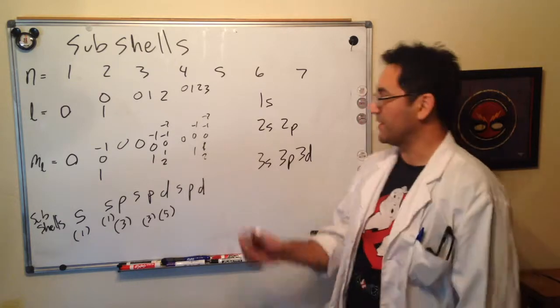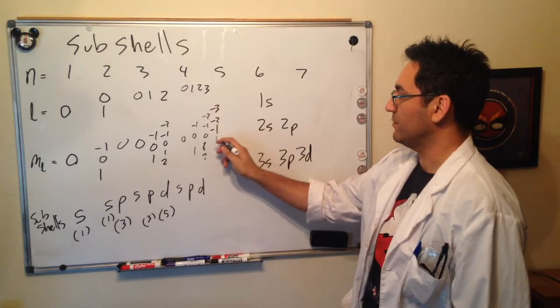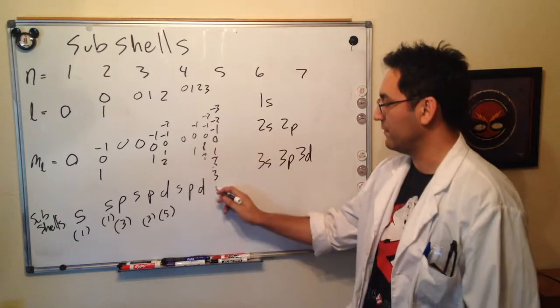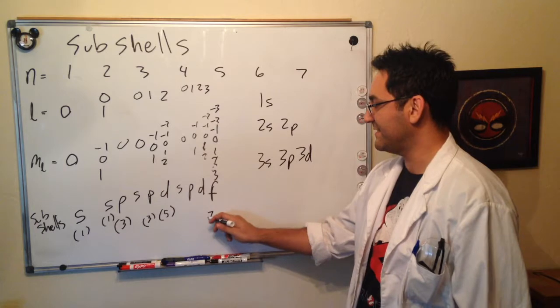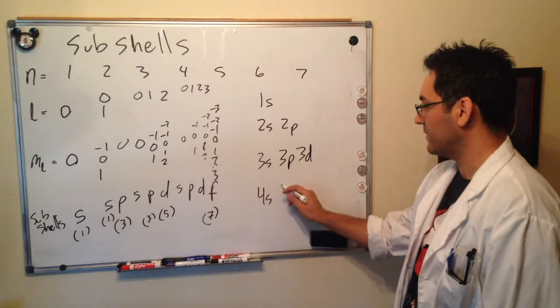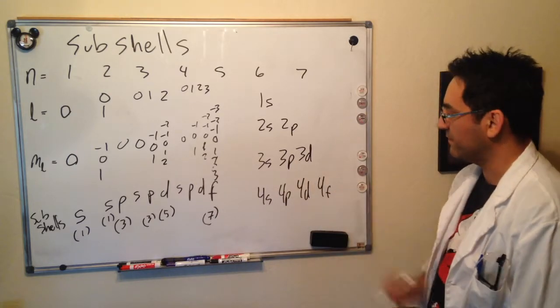And now we get a new subshell. Minus 3, minus 2, minus 1, 0, 1, 2, 3. For a total of seven of these f shells. So we get a 4s, 4p, 4d, 4f.